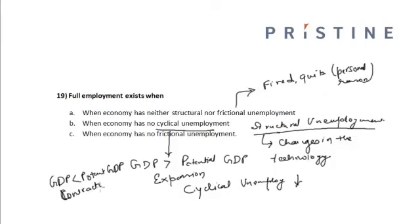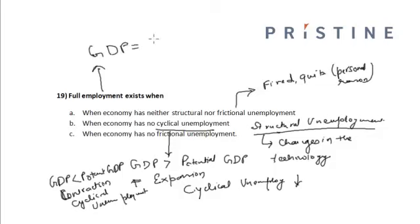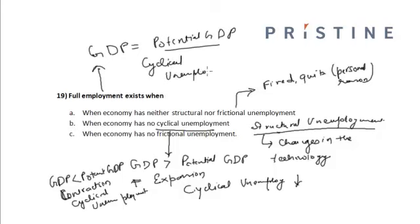At the condition of full employment, there is neither expansion nor contraction, and GDP is equal to potential GDP. In this case, cyclical unemployment is equal to zero. So the correct option is option B: at full employment, GDP equals its potential value, cyclical unemployment equals zero, but there will still be structural and/or frictional unemployment.